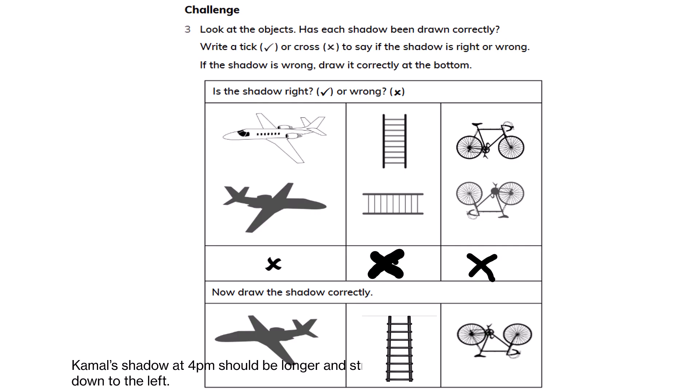For an aeroplane, the shadow is wrong, so the correct one has been drawn. For a ladder, the shadow was wrong, so the correct one has been drawn. And even for a cycle, it was wrong, so the correct one is drawn.